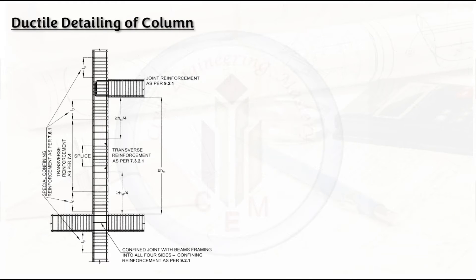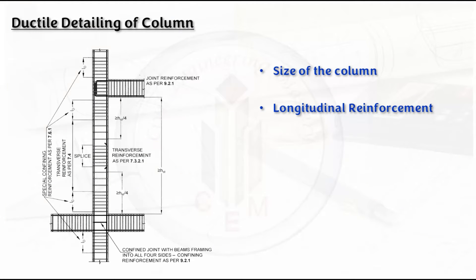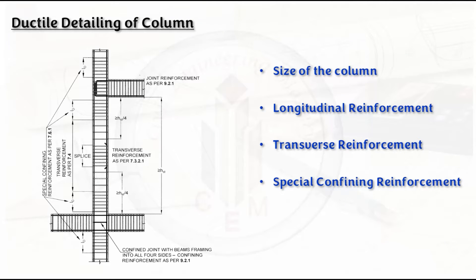Now let's look at the criteria we need to consider for ductile detailing of columns as per IS 13920-2016. The four criteria are: first, size of the column; second, longitudinal reinforcement; third, transverse reinforcement; and fourth, special confining reinforcement.